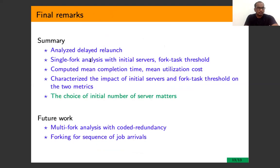In summary, for an MDS coded job, we analyzed a delayed relaunch scheme in which we specifically analyzed single forking. We analytically computed the mean service completion time and mean utilization cost with shifted exponential service times, and studied the effect of initial servers and forked threshold on these two metrics. We found that the choice of initial number of servers really matters. As future work, we want to extend this to multi-forking, and the analysis in this paper will provide insights on how to efficiently fork a job in lightly loaded scenarios. The queuing analysis with forking is not straightforward and remains open.